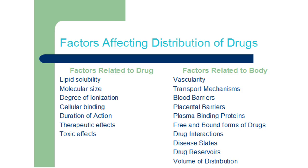These are some of the factors that affect distribution of a drug. These factors are divided into two types: factors related to drug and related to body. Factors related to the drug include lipid solubility, molecular size, degree of ionization, cellular binding, duration of action, therapeutic effects, and toxic effects.